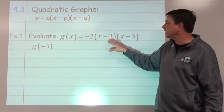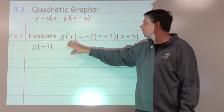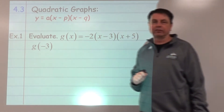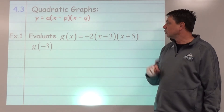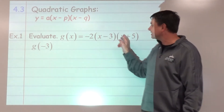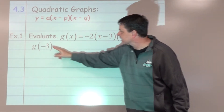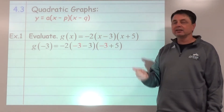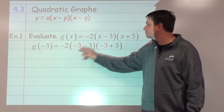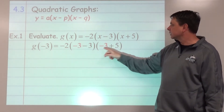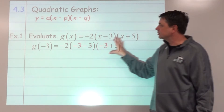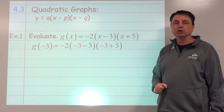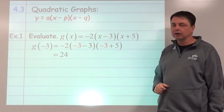Before we get into the graphs, let's do some evaluating. Given g of x equals that function, find g of negative 3. We replace all of the x's with negative 3, giving us negative 2 times (negative 3 minus 3) times (negative 3 plus 5). You can enter that directly into a calculator to get a numerical answer of 24.